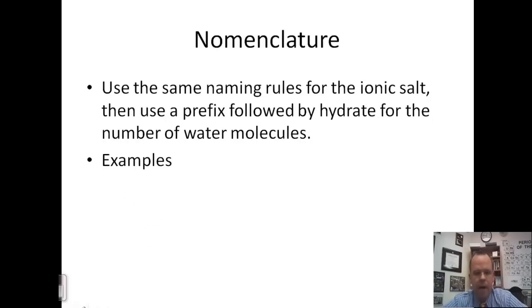Naming for these compounds is very similar to the naming we did before. You follow the exact same naming rules for the ionic salt, and then you put a prefix followed by the word hydrate to stand for the number of water molecules. So in our case that we just looked at, CuCl2·3H2O, the name for this would be copper chloride, the name for CuCl2, and then we would put tri for three hydrate.